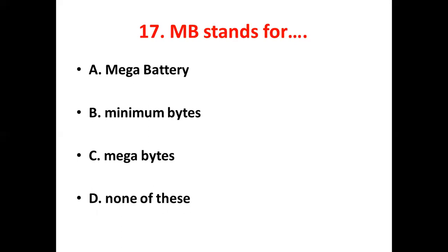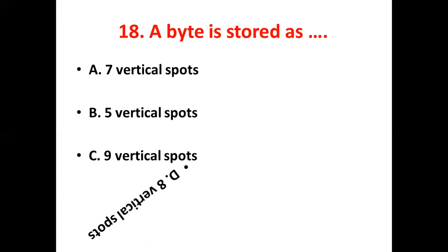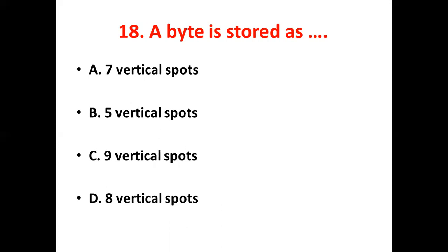18th bit: A byte is stored as dash. Option A, 7 vertical spots. Option B, 5 vertical spots. Option C, 9 vertical spots. Option D, 8 vertical spots. The answer is Option D, 8 vertical spots.